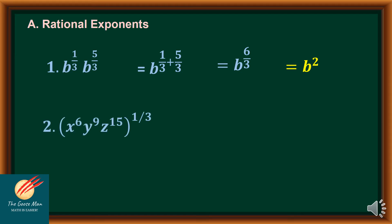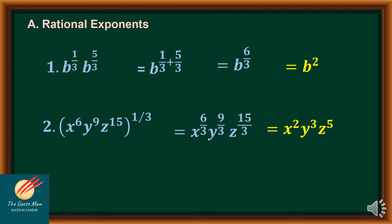Similarly, if I have x raised to 6 times y raised to 9 times z to the 15, all raised to 1 third, I can distribute 1 third. This gives x raised to 6 over 3, times y raised to 9 over 3, times z raised to 15 over 3. Simplifying further, I have x squared, y cubed, z to the 5th power.